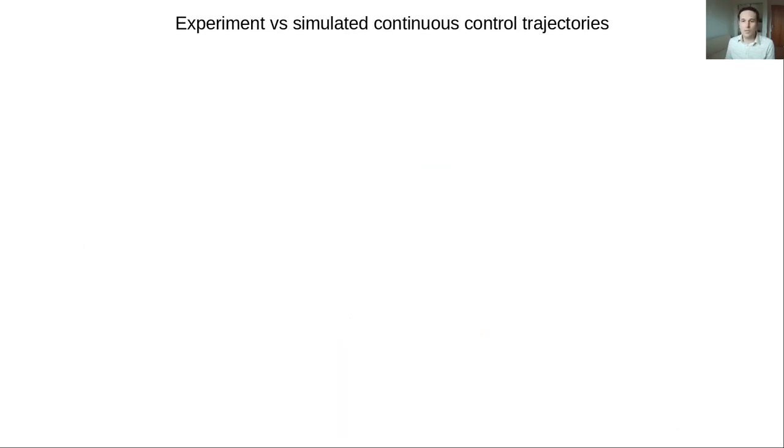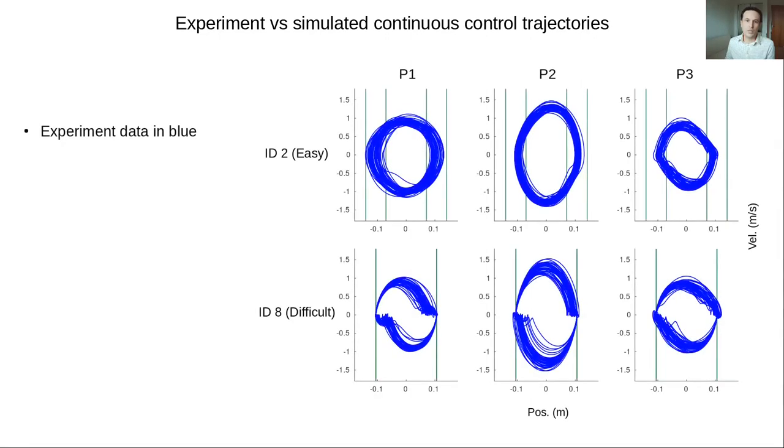Now let's have a brief look at the responses obtained when a continuous control model is used in simulation. Phase planes from the experimental data of three participants are shown in blue, for both easy and difficult conditions. Variability can be observed clearly, and the characteristic sub-movements of pointing can also be seen for the difficult condition at the bottom of the figure.